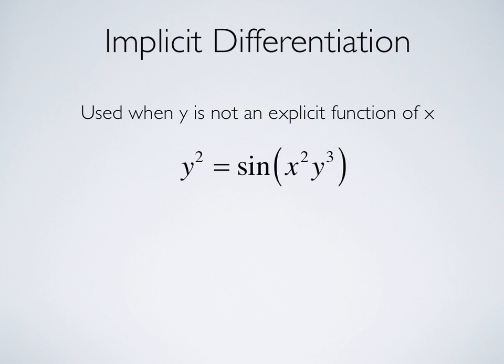For example, suppose that y squared equals sine of x squared times y cubed. In this case, we can't just calculate dy dx using the normal methods because the x and y terms are intermingled.